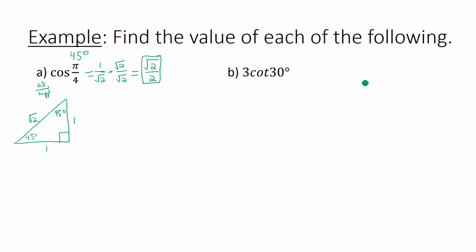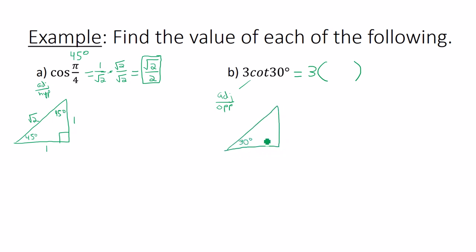Next: 3 times cotangent of 30 degrees. The 3 stays out front and will be multiplied by whatever cotangent of 30 degrees is. Cotangent is the reciprocal of tangent, so cotangent is adjacent over opposite. Draw a 30-60-90 triangle. For the 30-degree angle, adjacent is square root of 3 and opposite is 1, so cotangent of 30 degrees equals square root of 3 over 1. Multiply 3 times square root of 3 over 1 to get 3 square root of 3.